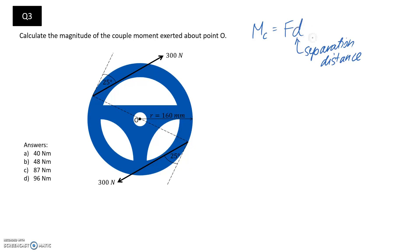The separation distance is the one that's a little bit tricky. If we just used the 300 newtons straight away, the separation distance we're looking for is the shortest line you can draw between these two. It's going to be something like this.